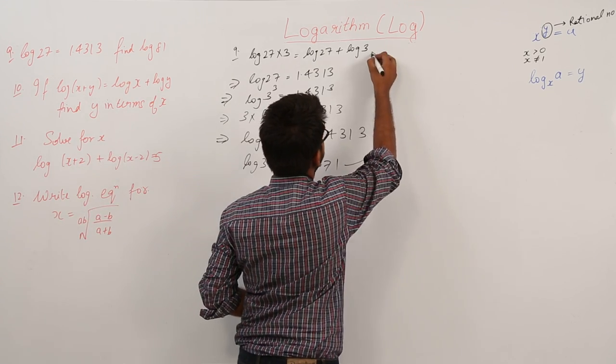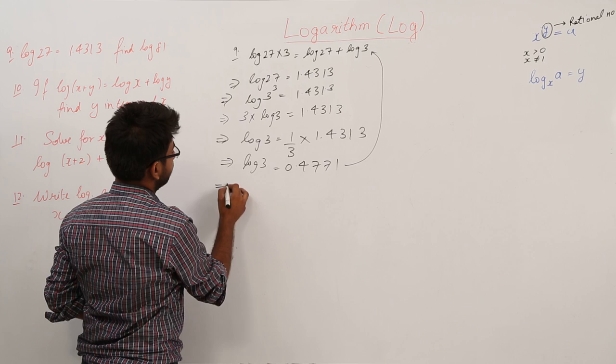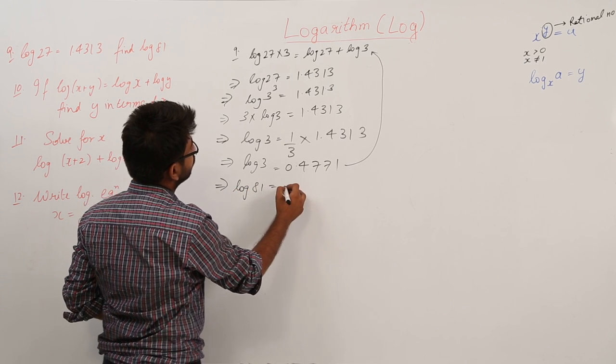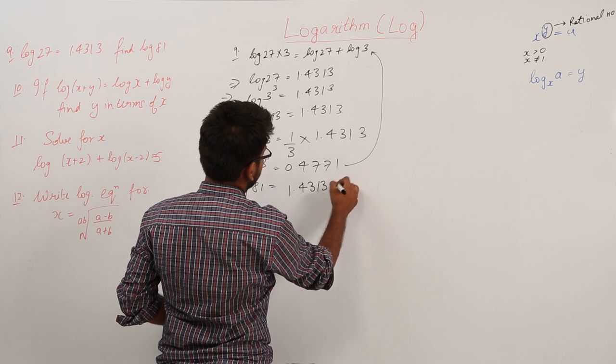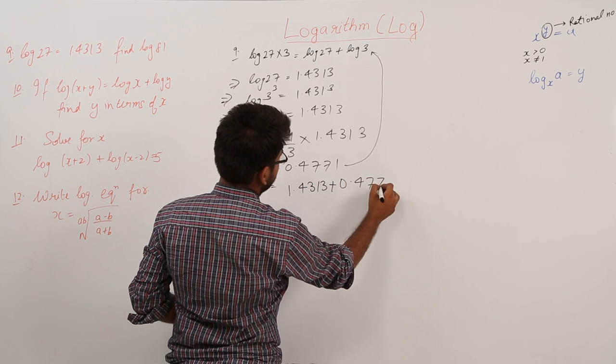Now, let us put this in this equation. It becomes log 81 is equal to log 27 is 1.4313 plus 0.4771.